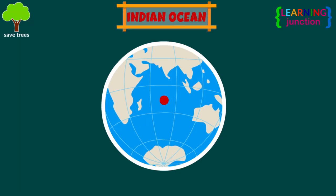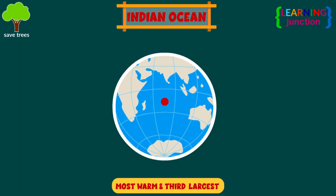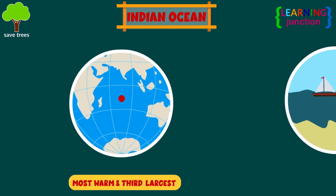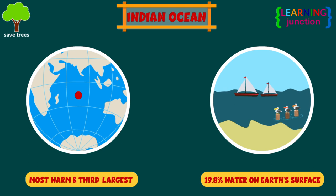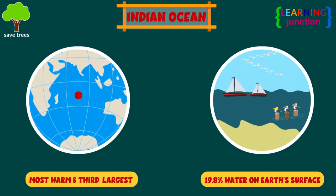The Indian Ocean is the most warm and third largest of the world's five oceanic divisions, covering about 19.8% of the water on earth's surface.